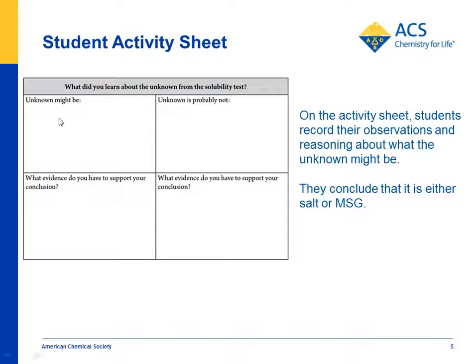By looking at how much substance is left in each cup, students can determine how much must have dissolved. They look at the unknown — the coarse kosher salt — and compare it to the other four substances. There are one or two that might be the unknown, but two that definitely are not. Students conclude it's either salt or MSG; it's definitely not Epsom salt and not sugar.